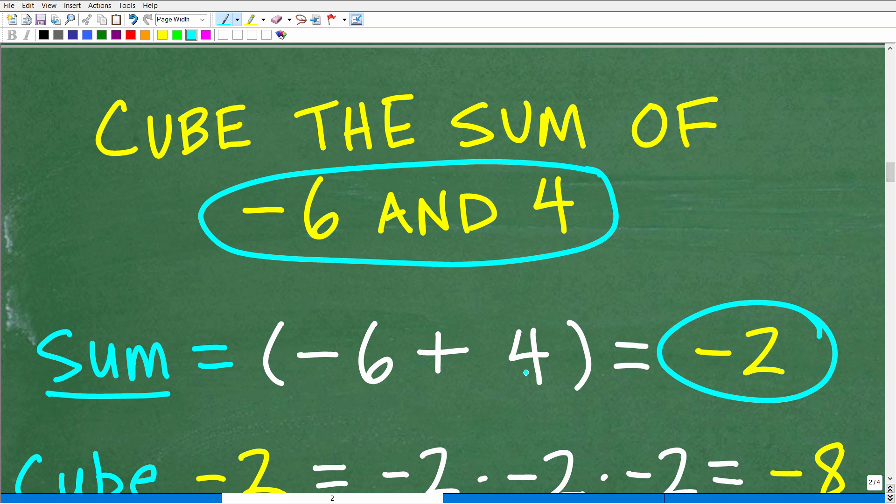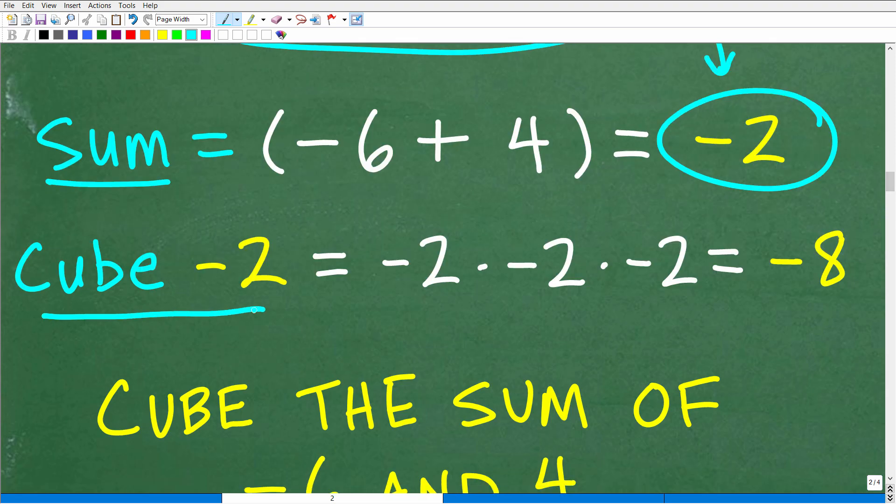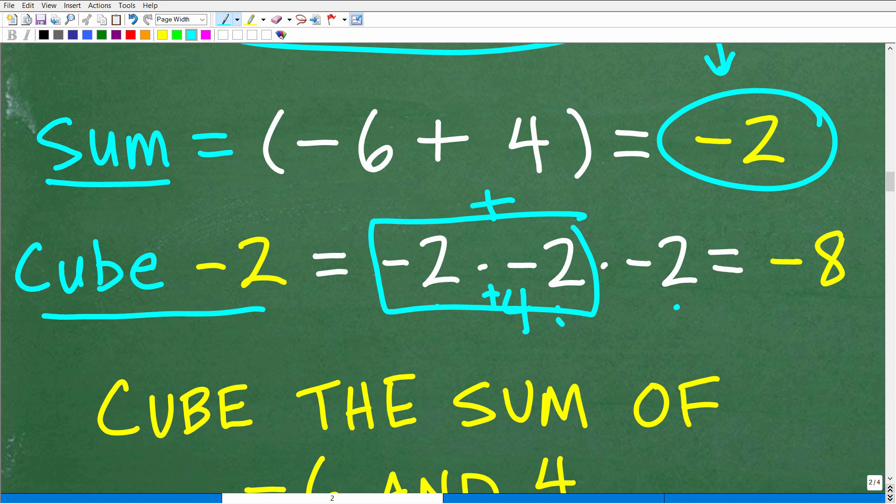The sum of negative 6 and 4 is negative 2. And we want to cube the sum of negative 6 and 4. Of course, we just found out that that is negative 2. So we're going to end up cubing negative 2. So the cube of negative 2 is negative 2 times negative 2 times negative 2. And looking at the problem here, we want to take this problem and break it up. So negative 2 times negative 2 – negative times negative is positive – so this is a positive 4. Multiply it by a negative 2. A positive times a negative is negative. So we're going to end up with negative 8. And thus, we have solved the problem or answered the question: negative 8.